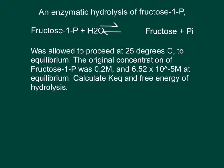Okay, so we're going to do a quick practice problem to calculate the equilibrium constant and delta G standard state. The question says, an enzymatic hydrolysis of fructose 1-phosphate, as shown in this mechanism,